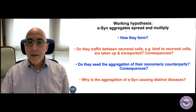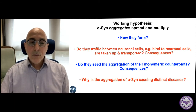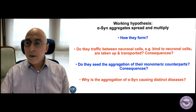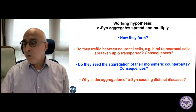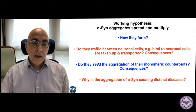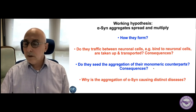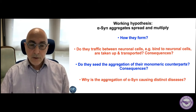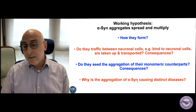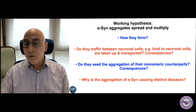This led many groups, including mine, to hypothesize that alpha-synuclein aggregates can spread and multiply. My talk will be about how they form. I will show you that they do indeed propagate between neuronal cells — how they bind to the cell, how they are taken up, how they are transported, and what the consequences of these events are. I will then show you seeding of endogenous alpha-synuclein by exogenous aggregates, and I will finish with how alpha-synuclein aggregates can cause different diseases.